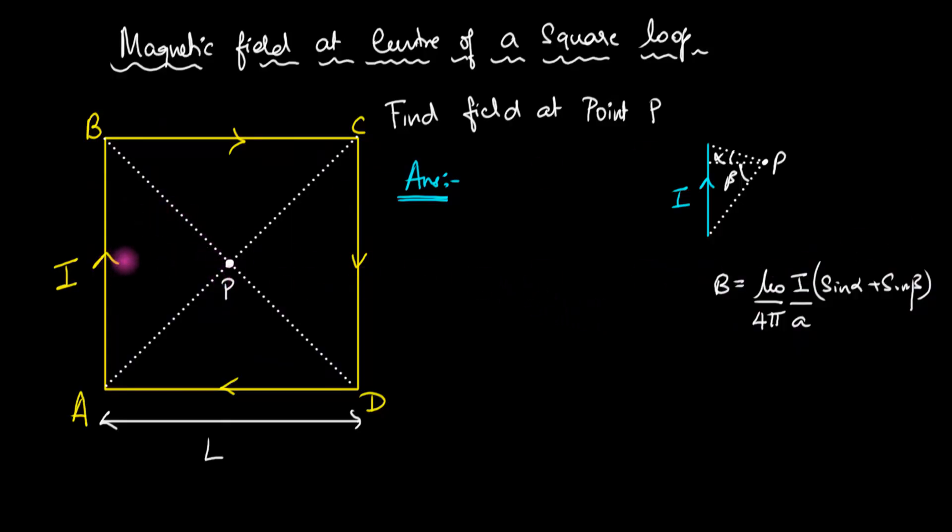The perpendicular distance from this point to wire AB is L/2, which is our A. I'm calculating the magnetic field at point P due to wire AB. So the magnetic field is mu0*I/(4pi*L/2) times